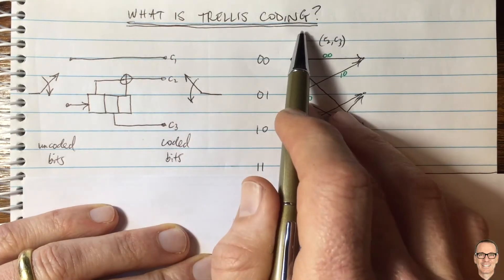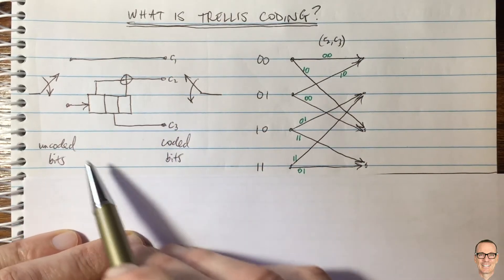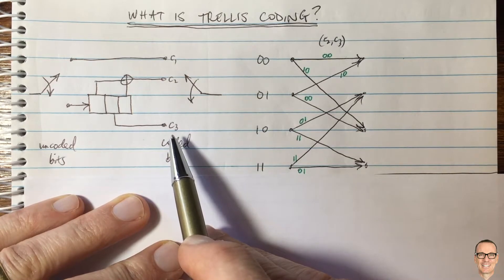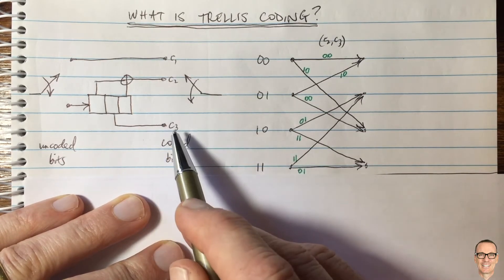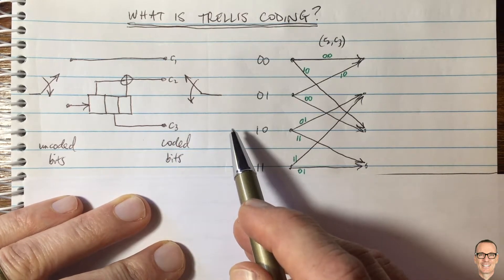What is trellis coding? Well, trellis coding is a version of convolutional coding where the coded bits are not sent at a higher data rate, which means more bandwidth, but instead a modulation format is used with a higher number of symbols, more symbols.